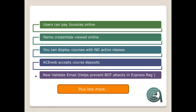Whether that's a trip, a large fee, or a program study course — a really nice option. We've got name credentials: the credential tool was new in the past year, so that's now available online. One feature that's not really new but not many customers are doing is the ability to display courses on ACEweb that don't have active classes. Being able to take course deposits. One of the new features is a validate email tool that really helps prevent bot attacks — automated web crawlers that fill out forms online if you've got Express Reg pages.